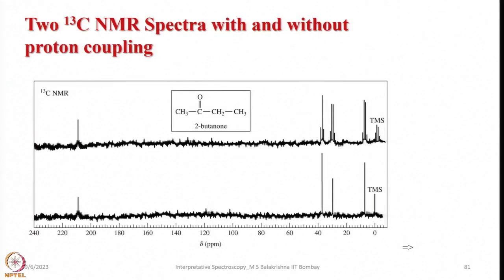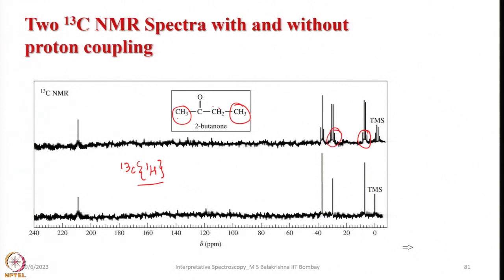Let me continue from where I had stopped. If you recall the spectra from my last lecture, you can see the 13C NMR spectra recorded both with coupling and without coupling. In the coupled spectrum, you anticipate interaction of carbon with adjacent hydrogen atoms. For example, when carbon interacts with 3 hydrogens we get a quadruplet, and this methylene is split by 2 hydrogen atoms, so we get 3 lines.